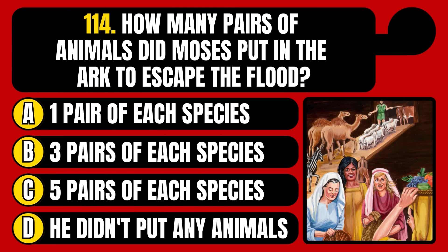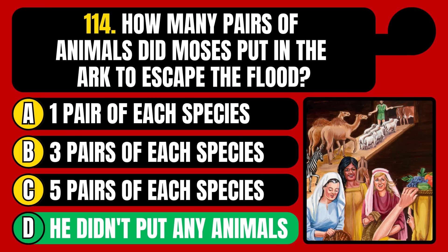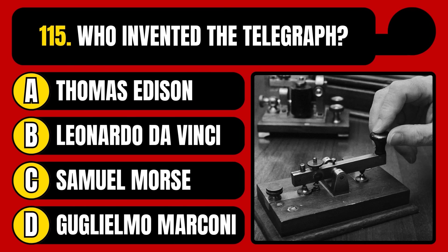How many pairs of animals did Moses put in the ark to escape the flood? One pair of each species, three pairs, five pairs, or he didn't put any animals? The correct answer is option D, Moses did not put any animals in the ark because it wasn't him who built the ark — it was Noah who built the ark.